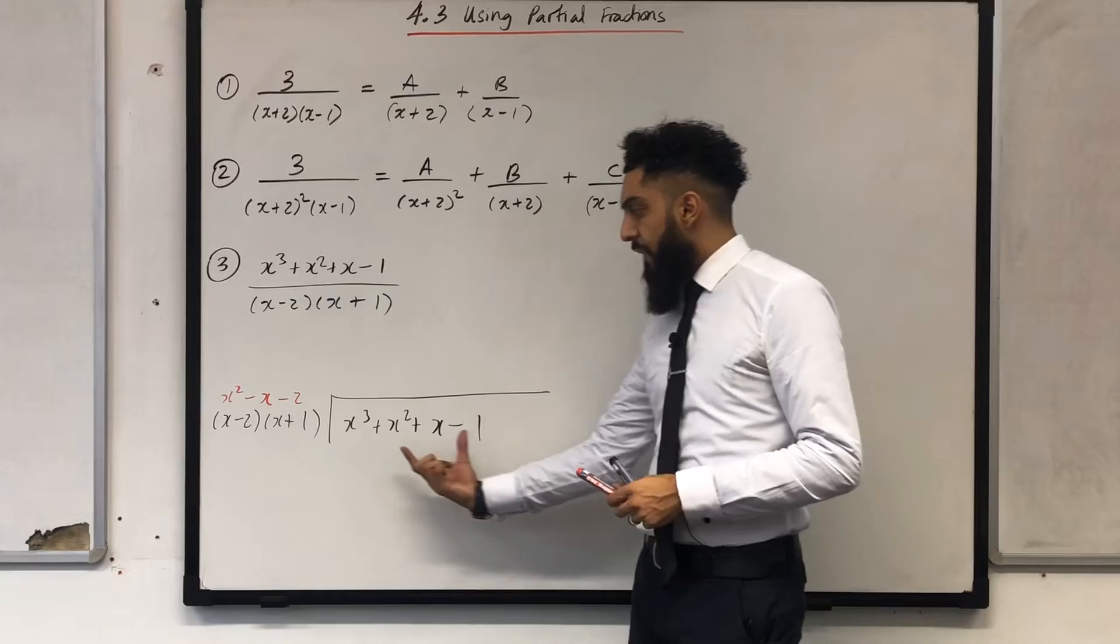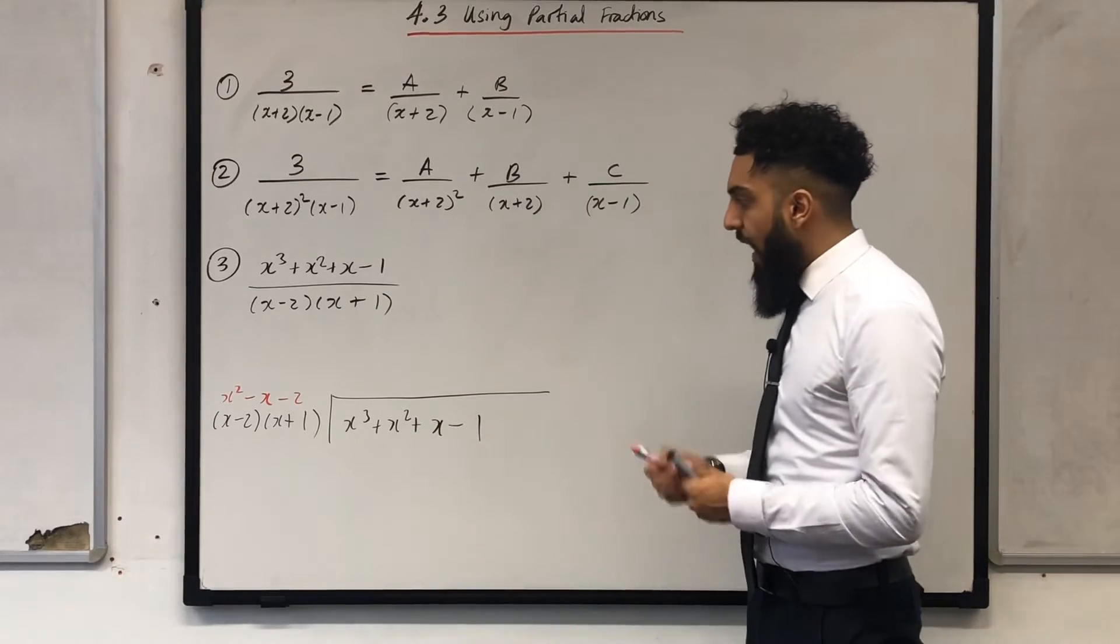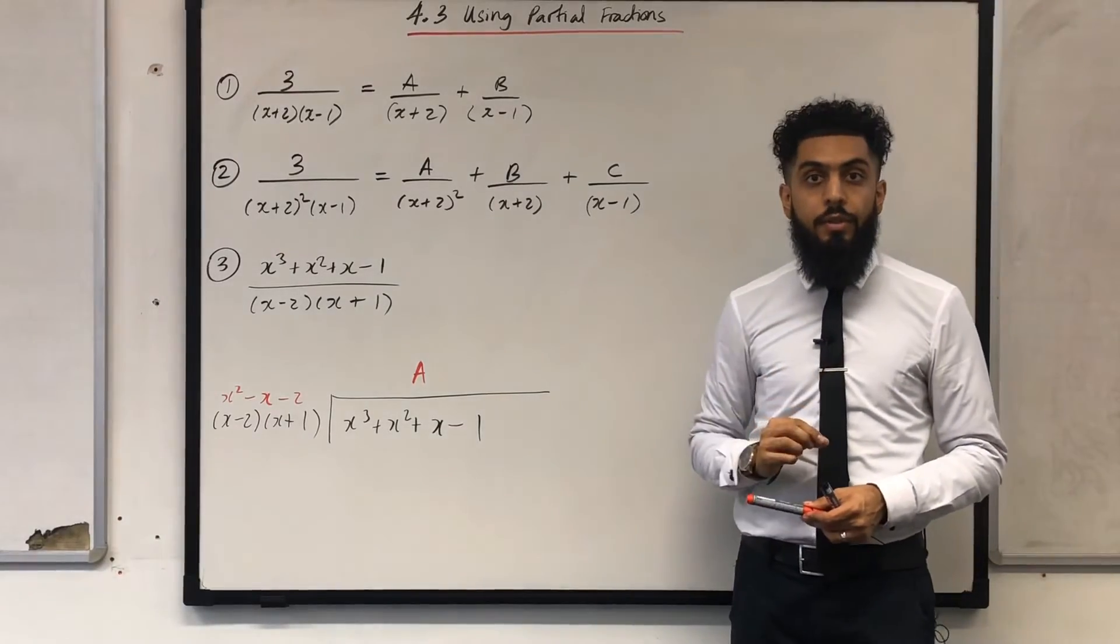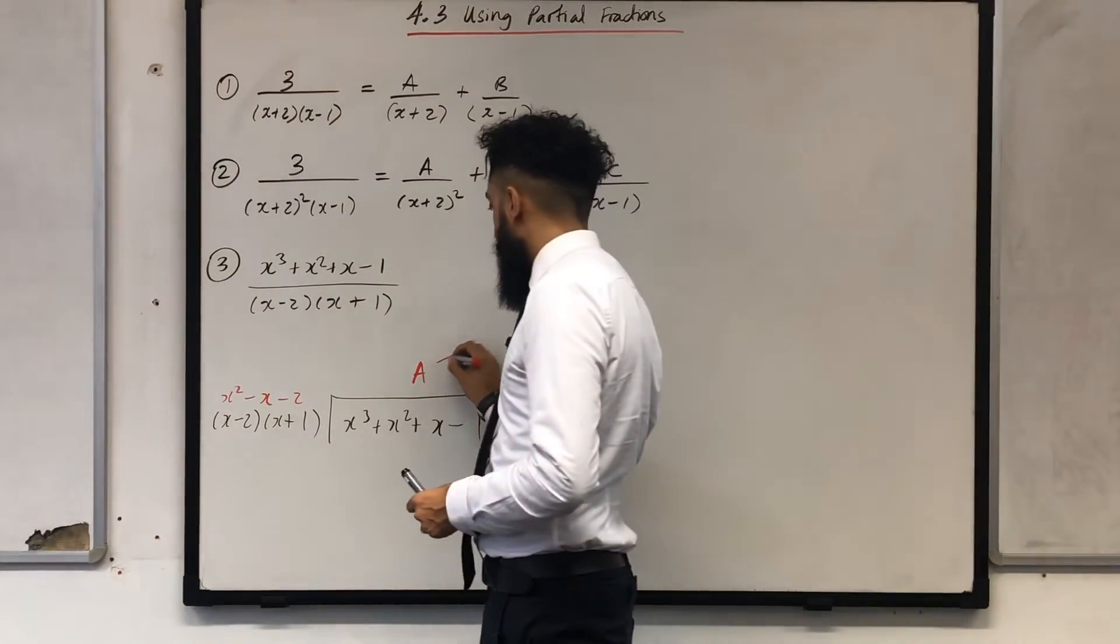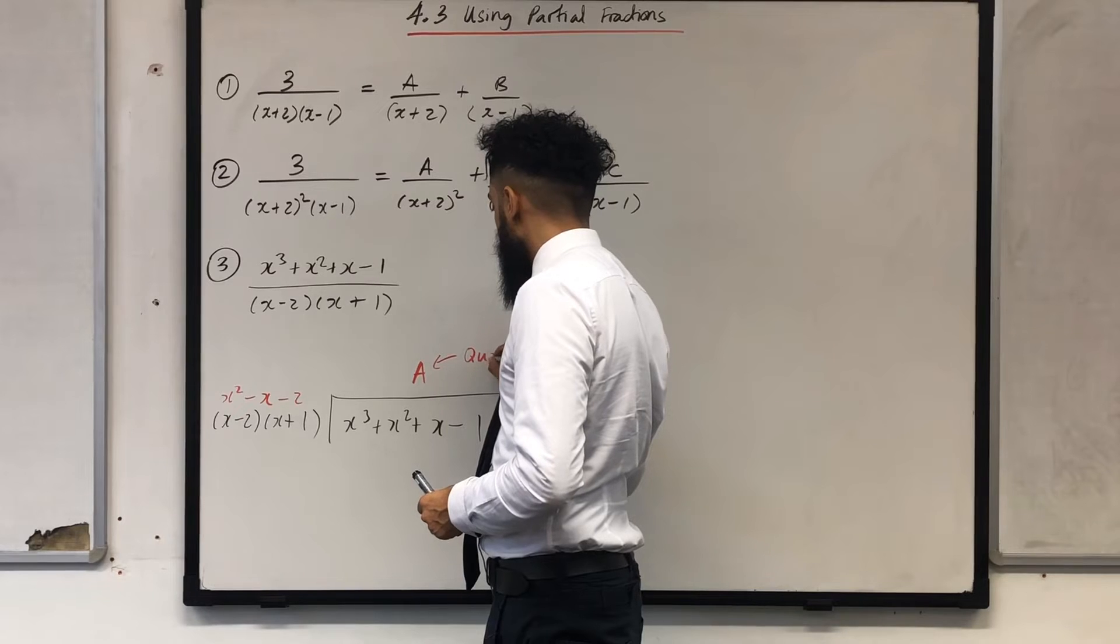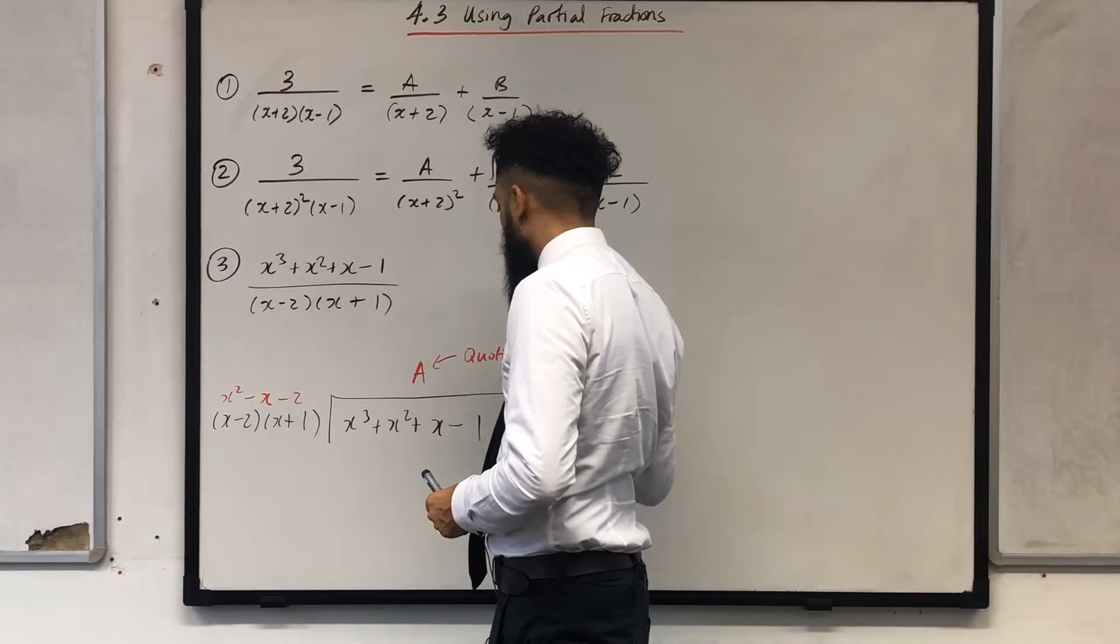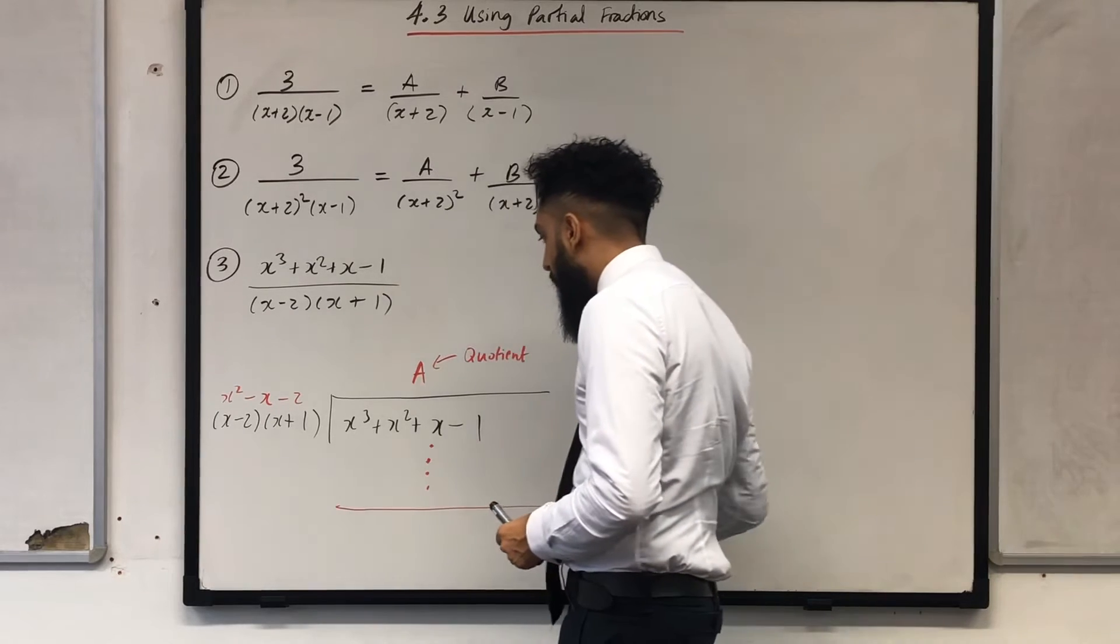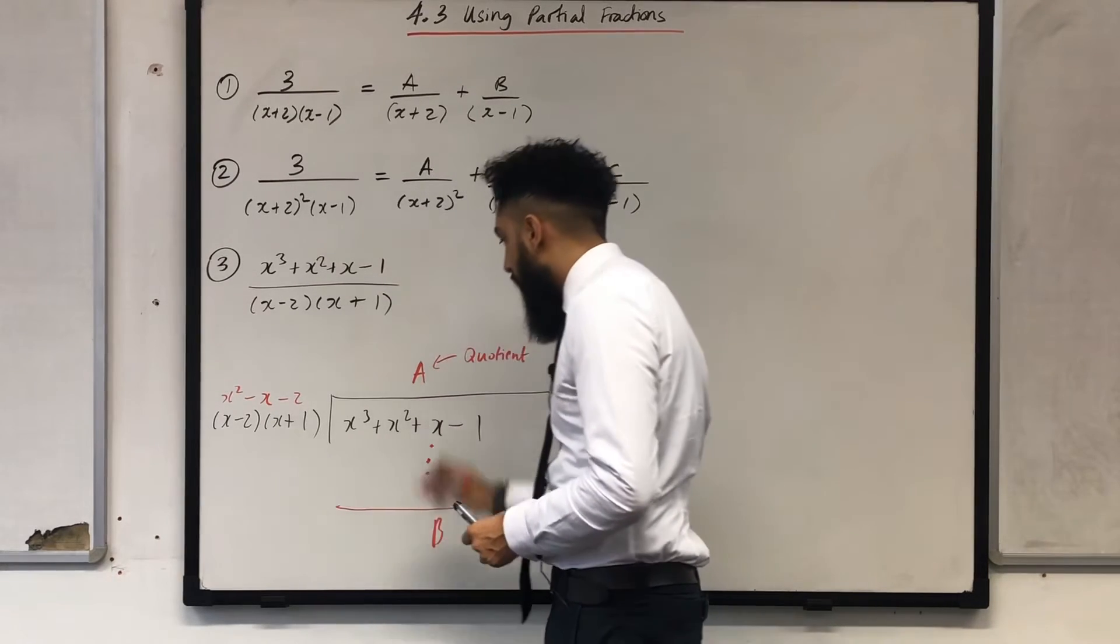Now the divisor is this quadratic. We have the cubic inside. Whatever we work out over here I can call it A. It's called the quotient. And when I carry out my long division whatever I've calculated over here is called my remainder.